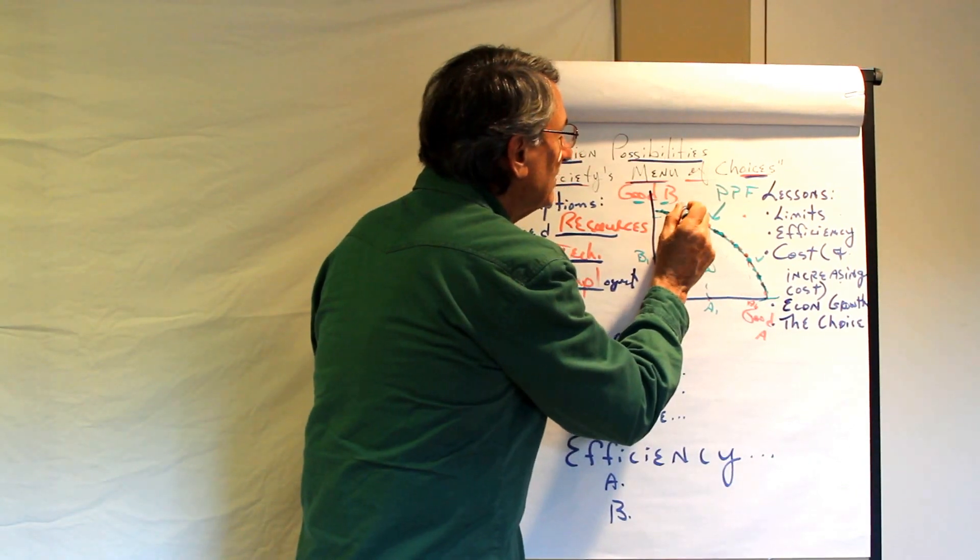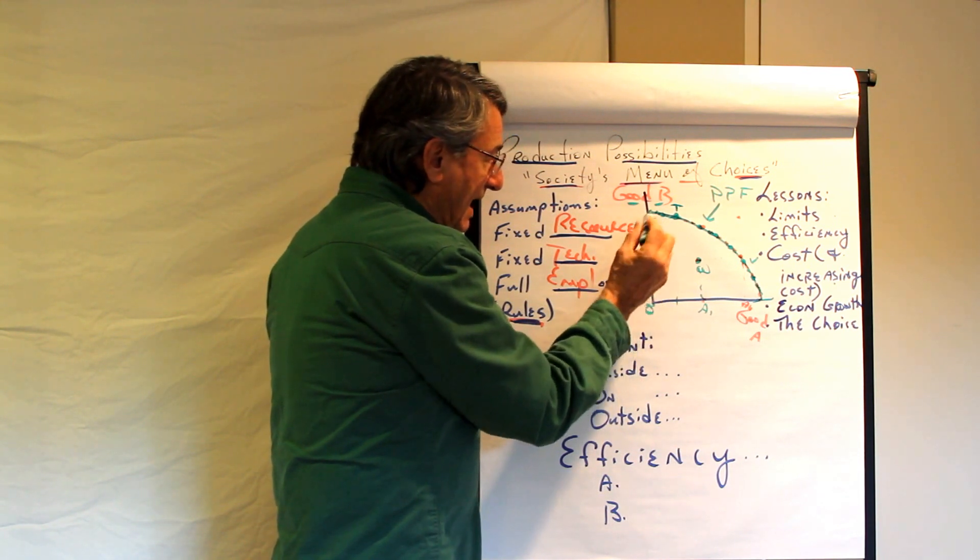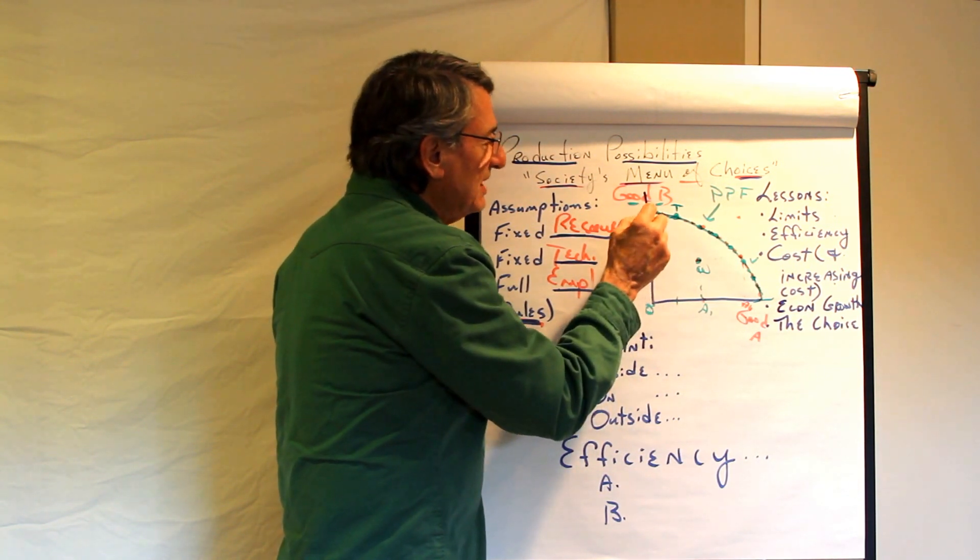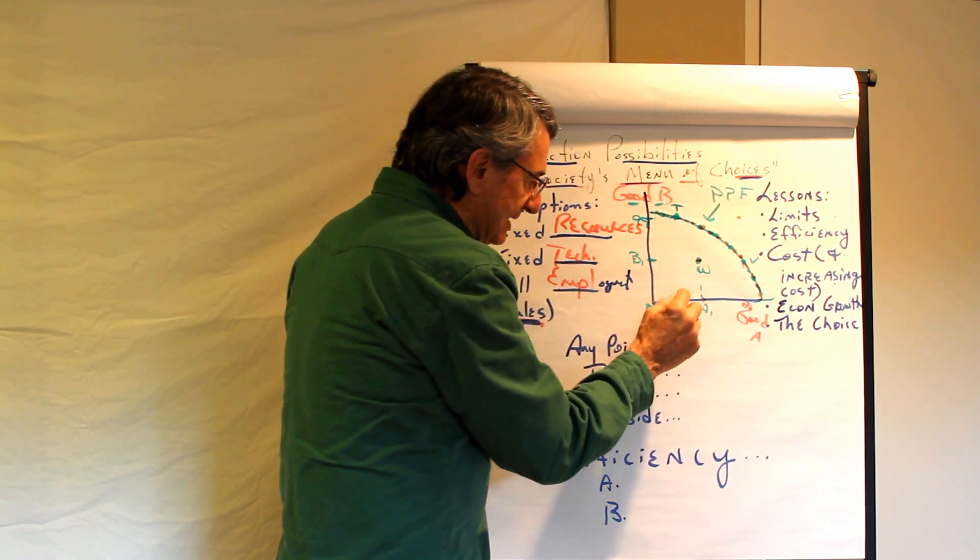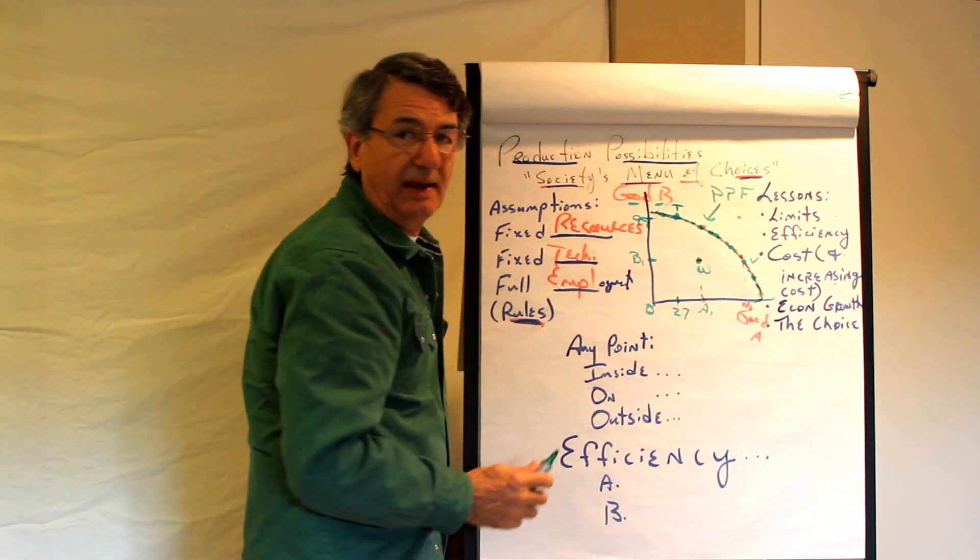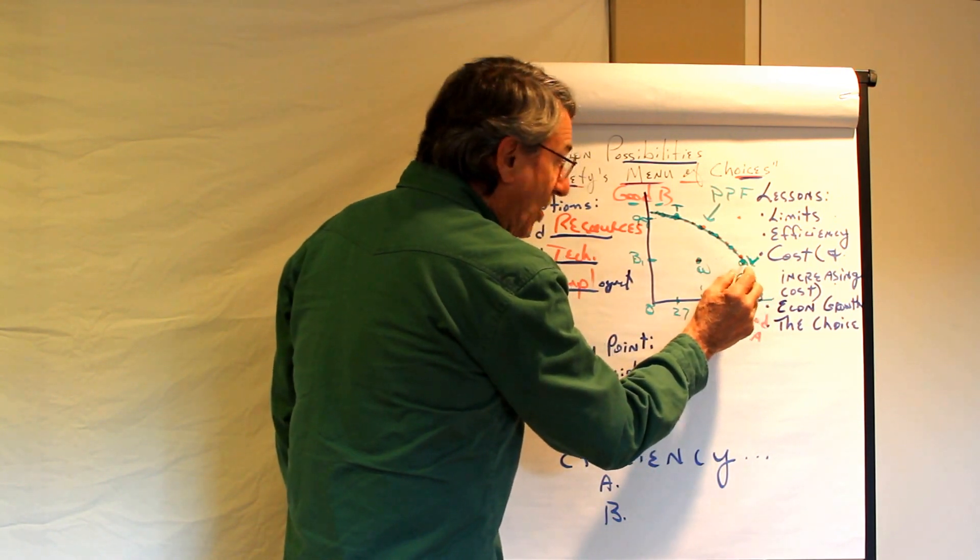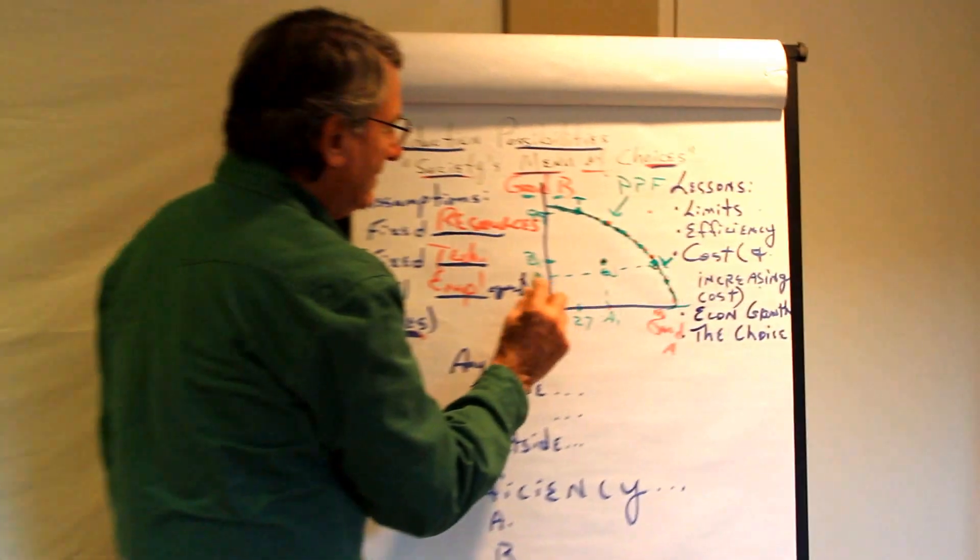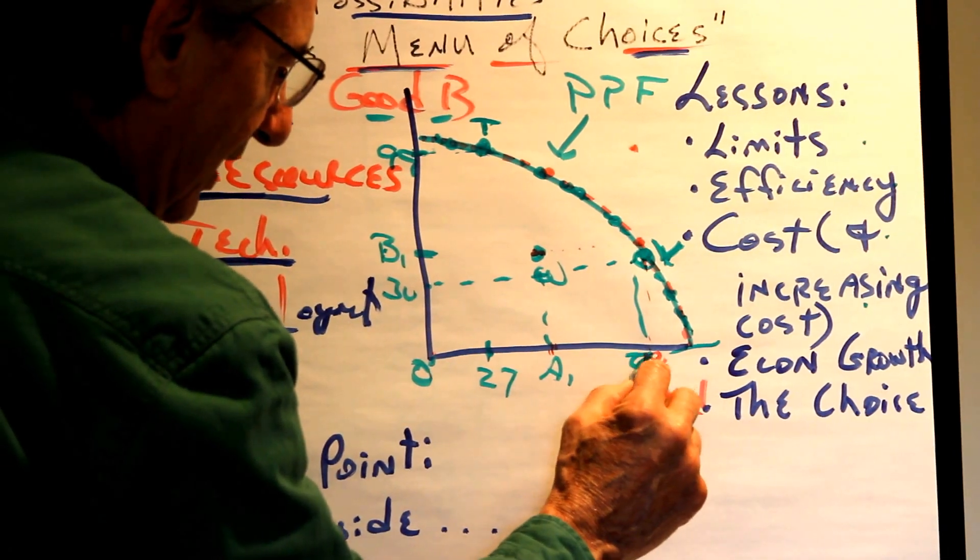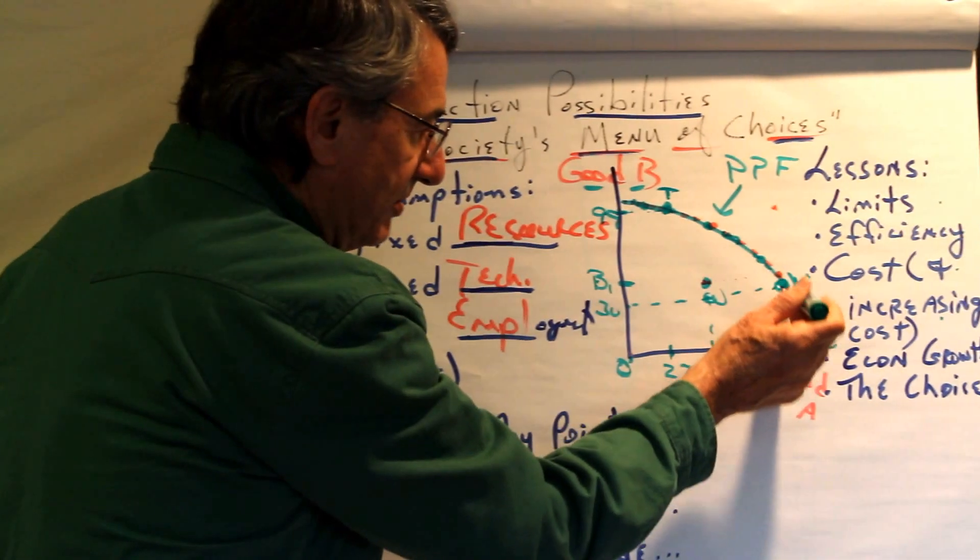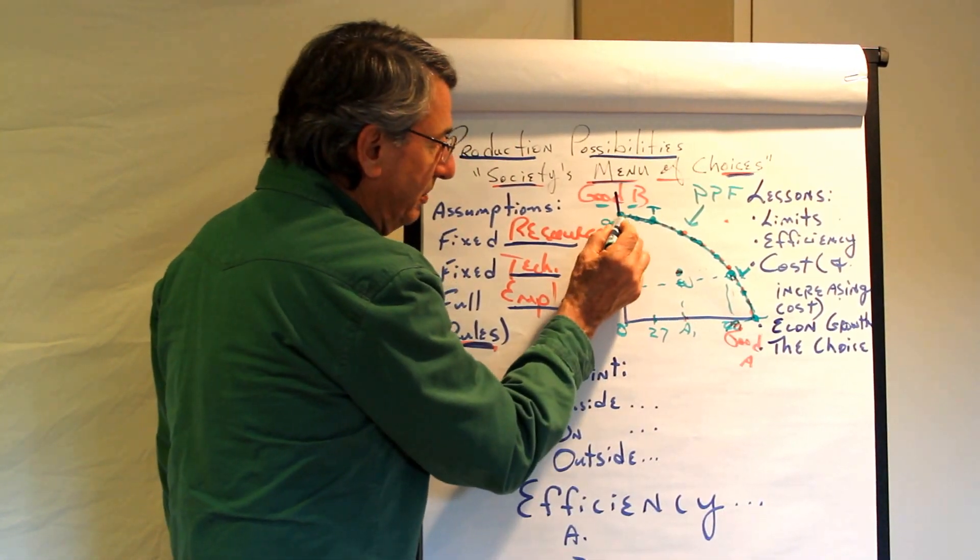For instance, this point here, point T, says the society can produce combination T, and that means it will produce this many units of good B, say 99, and if it does that, it has enough resources to produce 27 units of good A. That's a possible combination. Combination V over here is also maximum and possible, and they would produce, we'll say, 30 units of good B, but maybe 60, 70 units of good A. That also is a maximum possible combination. We could produce only good A, that many, only good B, that many, as well.